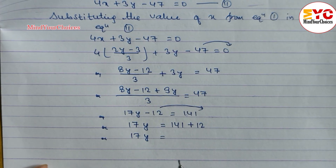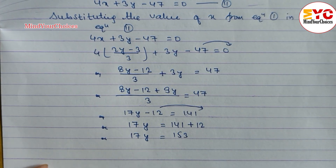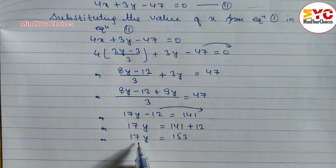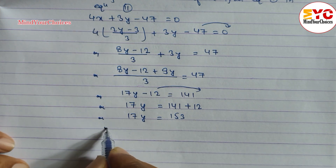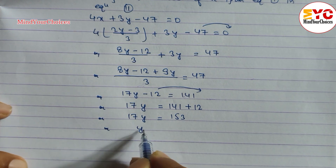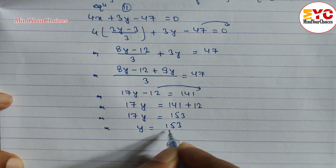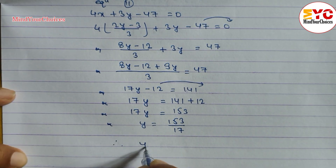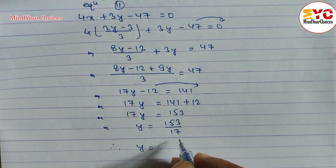Adding 141 plus 12 gives us 153. So 17y is equal to 153. Dividing both sides by 17, y is equal to 153 divided by 17, which equals 9. Therefore, y is equal to 9.